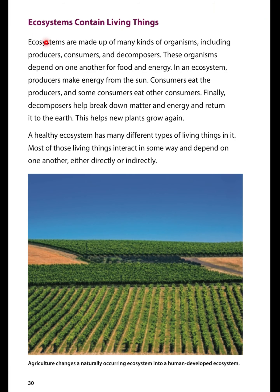Ecosystems contain living things. Ecosystems are made up of many kinds of organisms, including producers, consumers, and decomposers. These organisms depend on one another for food and energy. In an ecosystem, producers make energy from the sun. Consumers eat the producers, and some consumers eat other consumers. Finally, decomposers help break down matter and energy and return it to the earth. This helps new plants grow again. A healthy ecosystem has many different types of living things in it, and most of those living things interact in some way and depend on one another, either directly or indirectly.